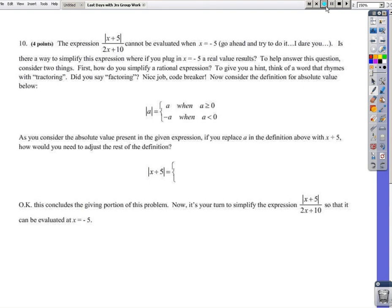What the problem is is we start with this expression up here, the absolute value of x plus 5 over 2x plus 10. And when we take x equals negative 5, we plug in negative 5 for x, what we get, at least for our knowledge at this point in our mathematical careers, is an undefined type answer.